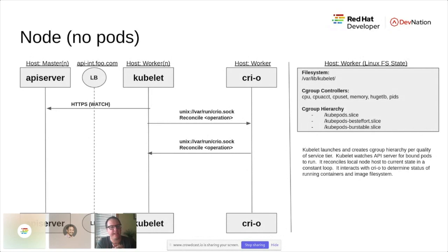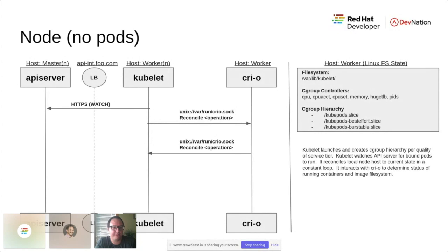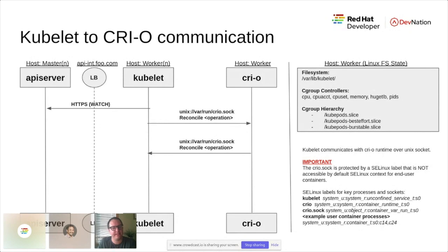At a steady state, the kubelet is typically looking at the API server and asking what it should do. Right now we have a node with no pods — nothing's actually happening. Even when there's a node with no pods, a lot of the patterns within Kubernetes are based around the concept of a controller. A kubelet is really nothing more than the node-local controller, trying to achieve the desired state that the API server says it should have.